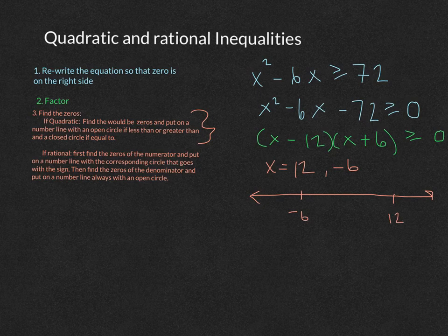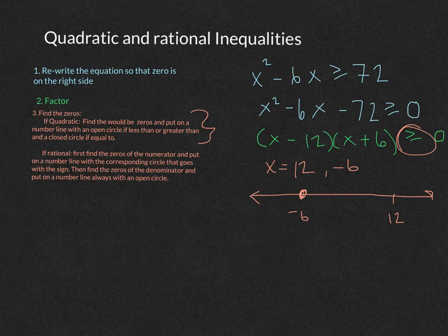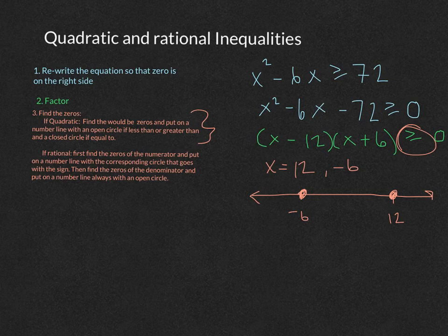So I have here negative 6 and 12. And you're going to put either an open circle or a closed circle based on this symbol here. Since it's a greater than or equal to, the equal to means it's closed circle. If it were just a greater than, you must have an open circle.